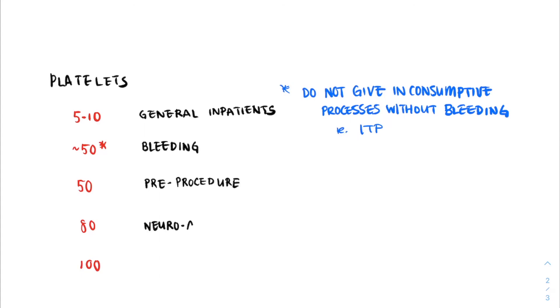We use a threshold of 80 for neuraxial interventions, such as spinal anesthetics. And finally, we use a platelet count of 100 for specifically neurosurgeries.